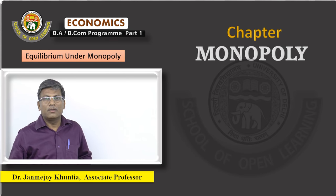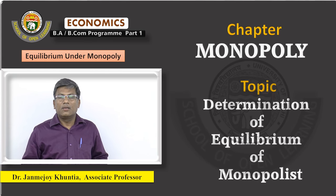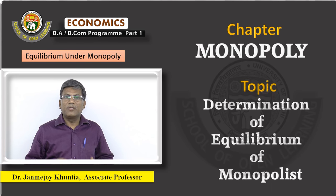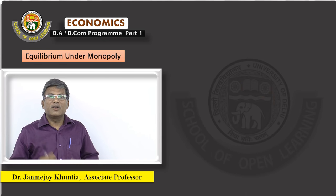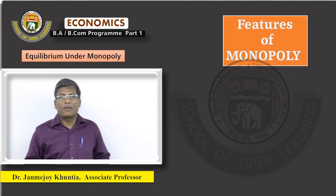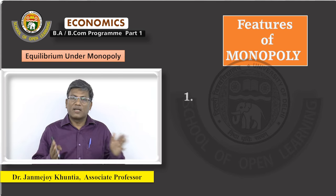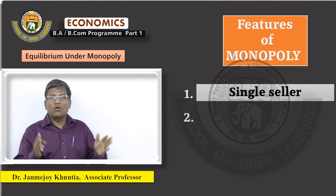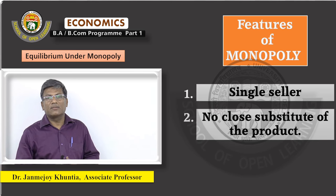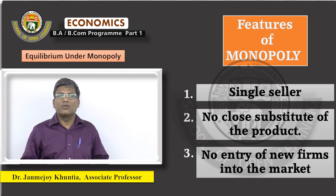The chapter is Monopoly and the topic is Determination of the Equilibrium of the Monopolist. What are the features of a Monopoly? Under Monopoly, there is a Single Seller, there is no Close Substitute of the Product, and there is no Entry into the Industry.